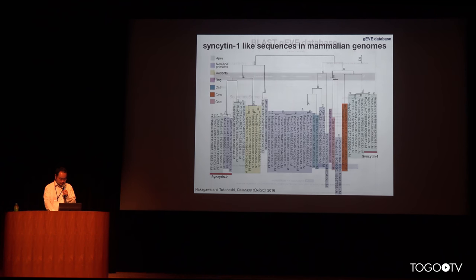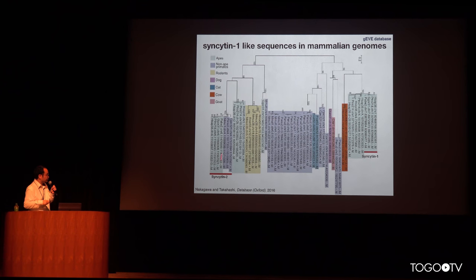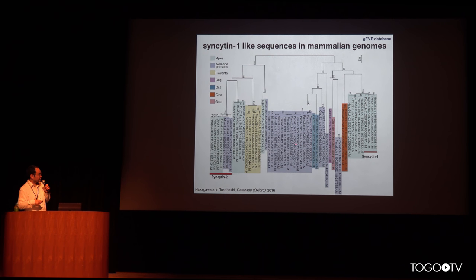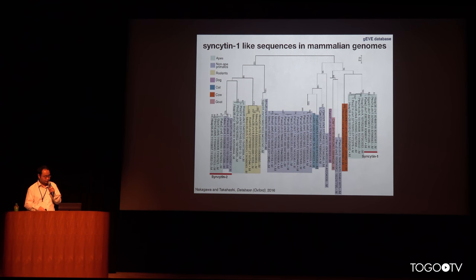BLAST search can be performed in the database. Using syncytin-1 from the human genome as a query, I can obtain highly syncytin-like sequences from all 20 mammalian genomes and build a phylogenetic tree. We successfully obtained a syncytin-1 cluster and a syncytin-2 cluster, and all of them have known functions. More interestingly, there are many sequences quite similar to syncytin-1 and syncytin-2, but whether these have obtained function in their host species is not yet known — nobody knows whether they've really acquired new function.